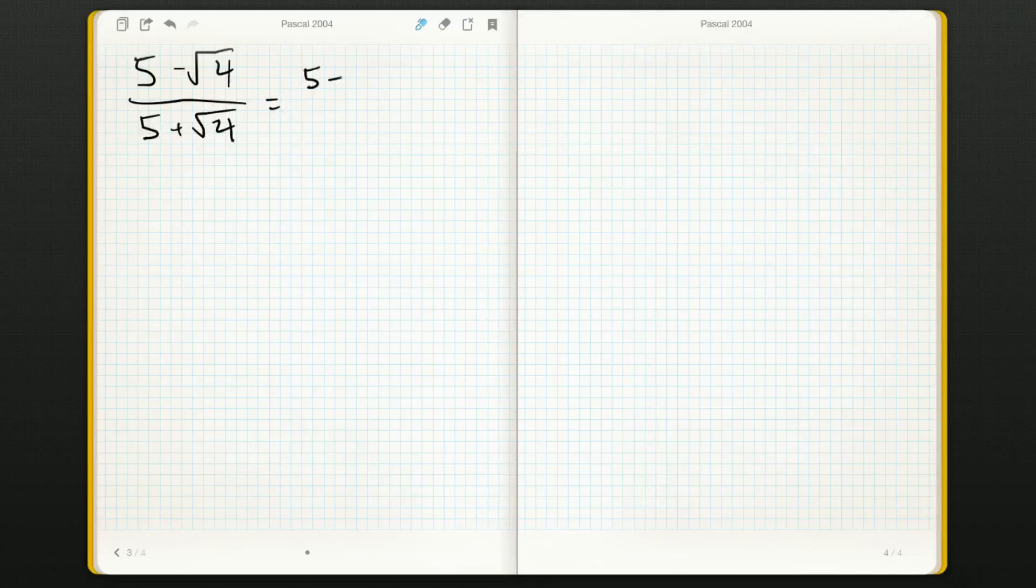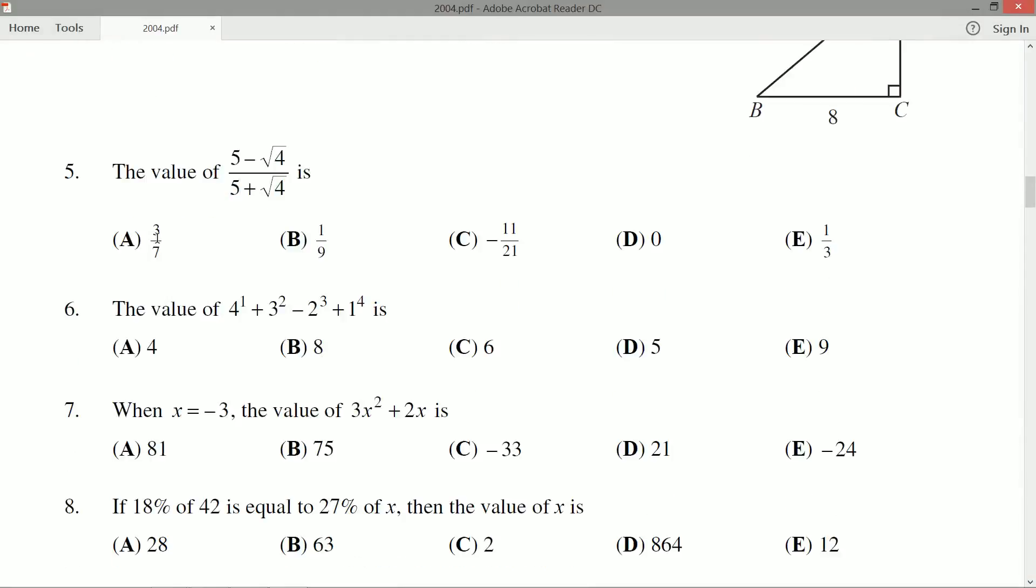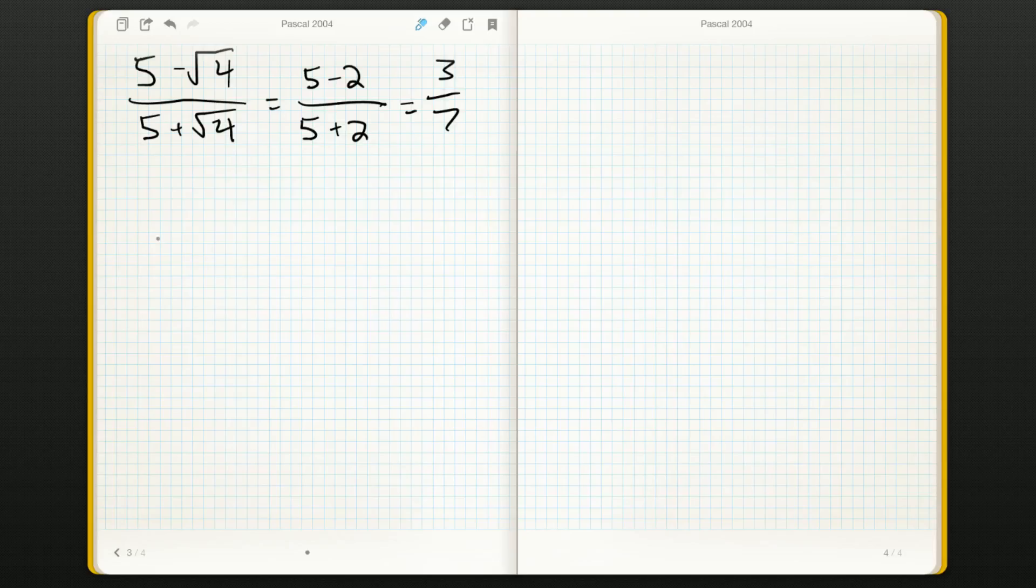If not, I'd suggest you brush up on squares and square roots. So we get 3/7, and that's as simple as it gets. Seven is a prime number, no extra factors. The answer is A, 3/7.